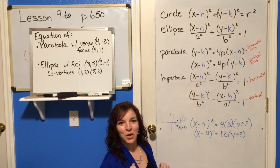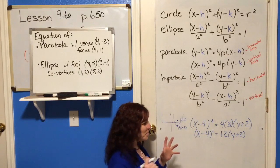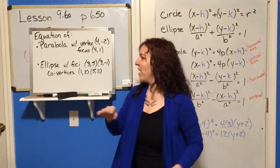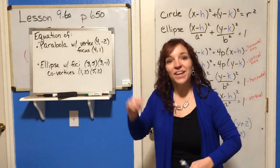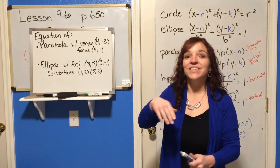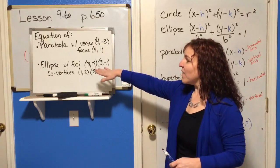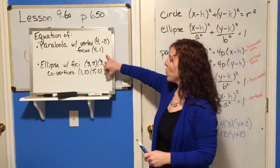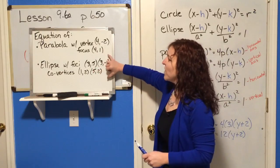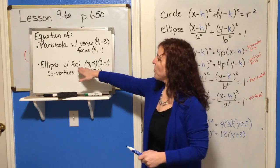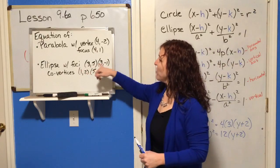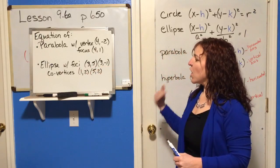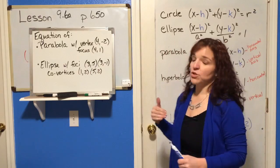That's all. Now let's write the equation of an ellipse with foci at 3, 5 and 3, negative 1, and co-vertices of 1, 2 and 5, 2.